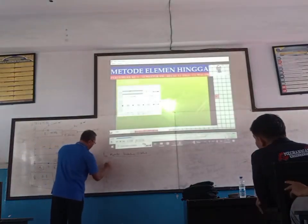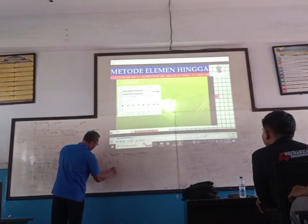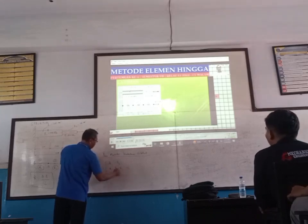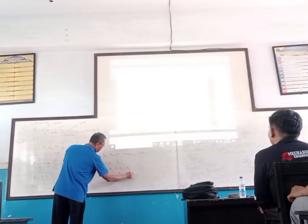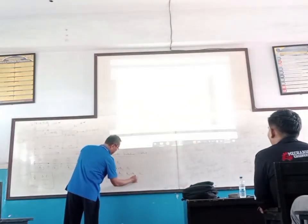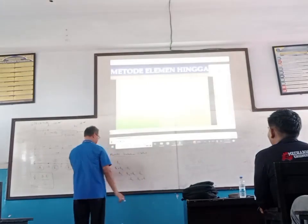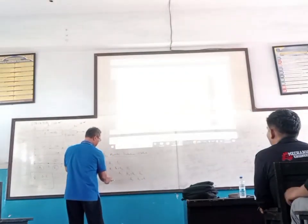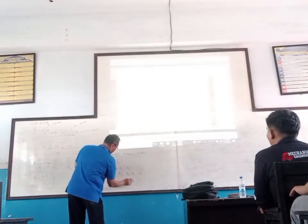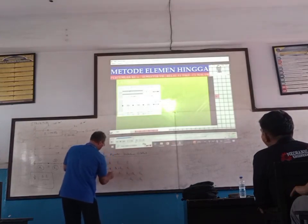So the 4×4 global stiffness matrix is assembled as: [K1, -K1, 0, 0; -K1, K1+K2, -K2, 0; 0, -K2, K2+K3, -K3; 0, 0, -K3, K3]. The zeros appear at positions where elements are not connected.